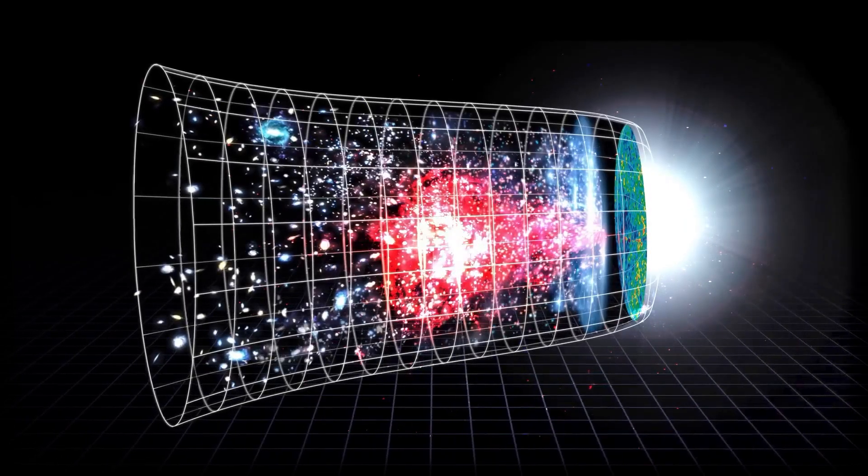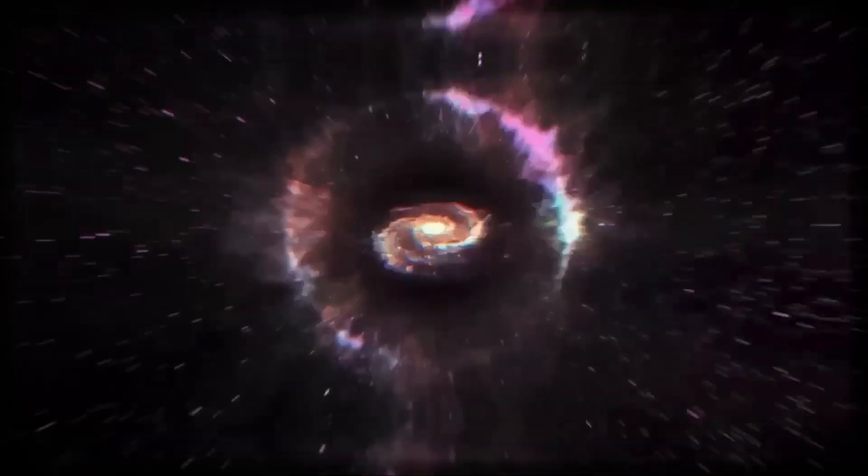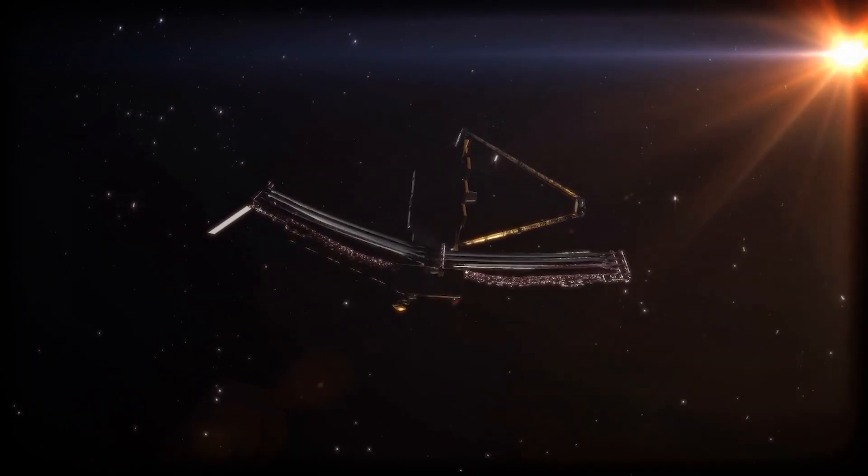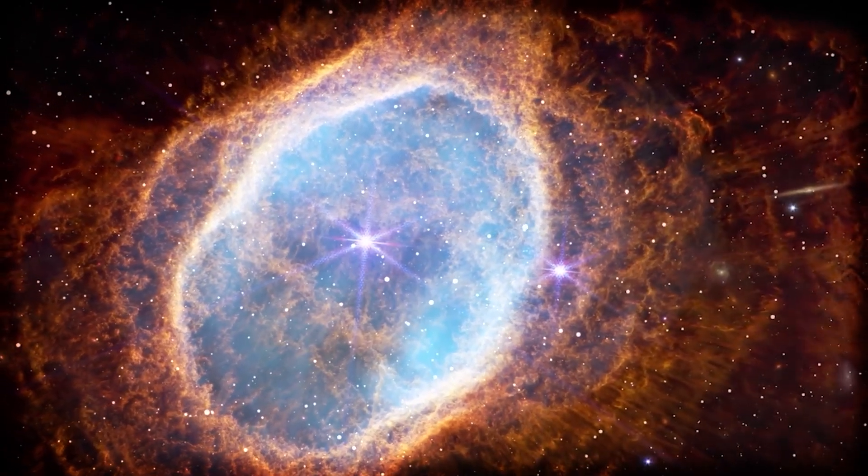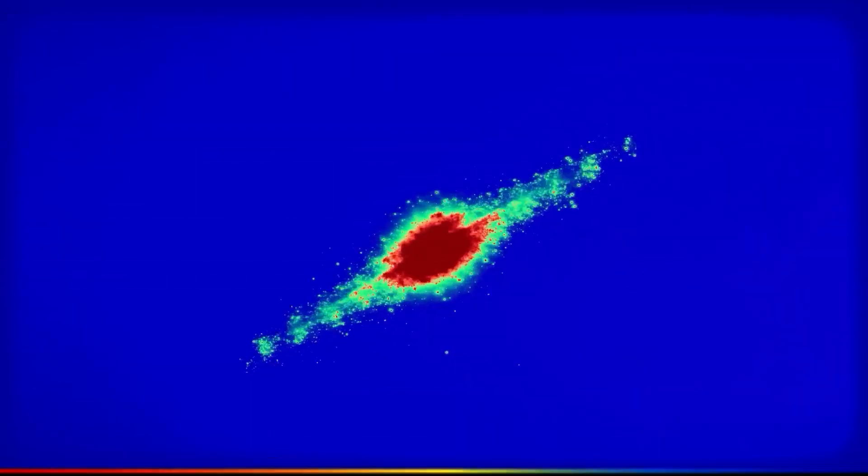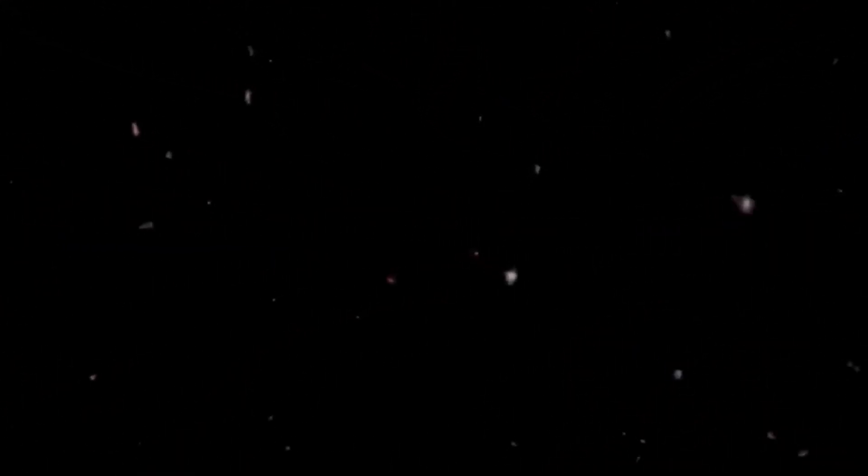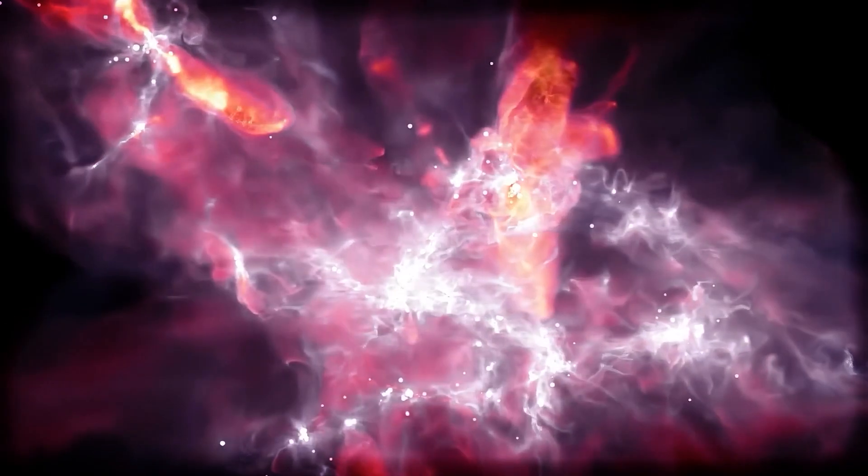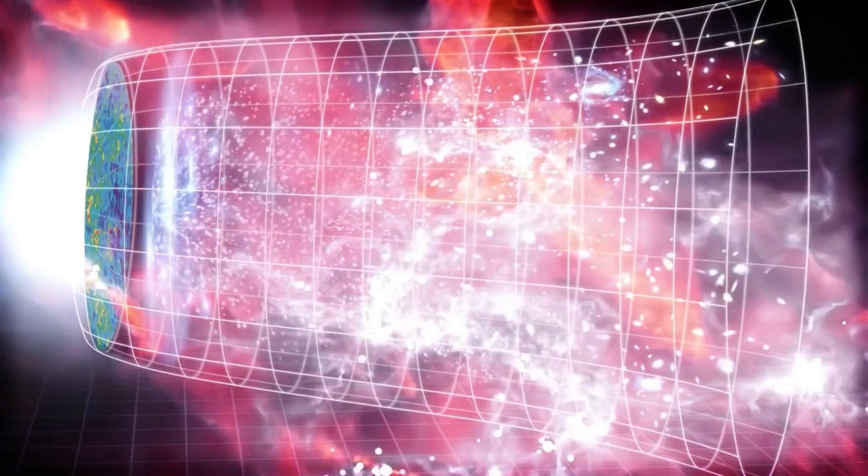See, under the standard model of cosmology, there simply shouldn't have been enough time or raw material for galaxies like these to form so quickly. The early universe was still chaotic, filled mostly with hydrogen gas. Stars were supposed to form gradually over hundreds of millions of years, with galaxies evolving slowly as more and more stars were born. But these ancient objects are doing something radically different. Using powerful spectroscopic tools to analyze the light from these galaxies, essentially decoding their chemical fingerprints, scientists discovered something stunning. These galaxies didn't follow the rules. They didn't take their time. They went all in. They turned nearly 100% of their gas into stars.